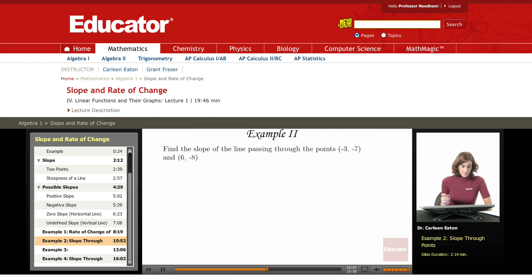Find the slope of the line passing through the points (-3, -7) and (6, -8).